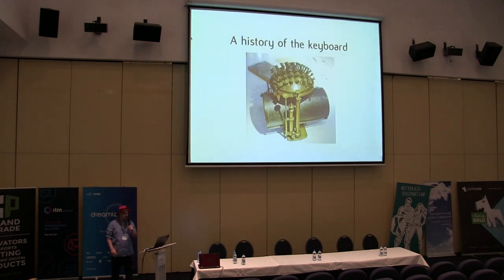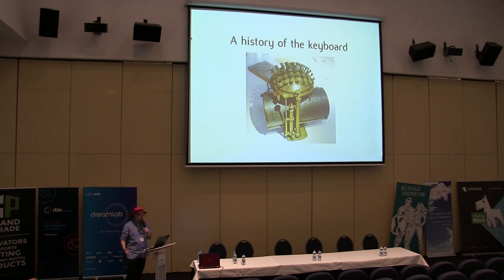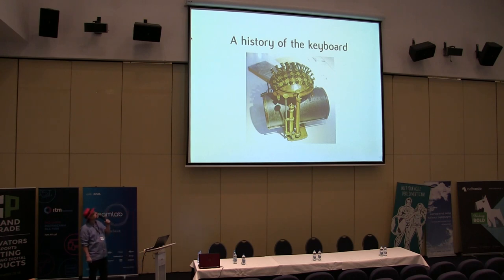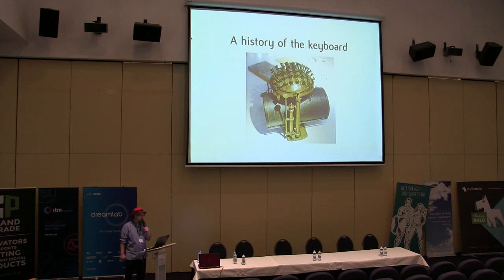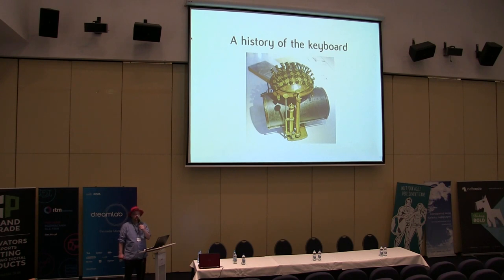Now we're going to talk about the history of the keyboard, because it's interesting to know why the keyboard looks like it does. It was created for mechanical typewriters. This is actually the Hansen's Writing Ball — the world's first commercially available typewriter. It looks very steampunk. If you want one, there are around 40 in existence. They go on sale for between $50,000 and $150,000, so you're not going to use one of these.